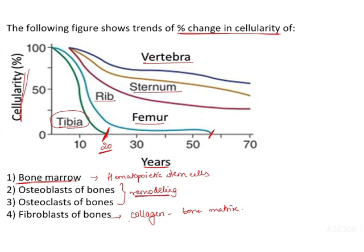Osteoblast and osteoclast are important for bone remodeling and therefore will not show a decrease to 0% as shown in the graph. Fibroblast deposits collagen forming the bone matrix, which is also an important component, so it will not show a greater decrease in cellularity. Out of the four options, bone marrow is the answer because hematopoiesis decreases with age — hematopoietic stem cells produce RBCs, WBCs, and platelets.